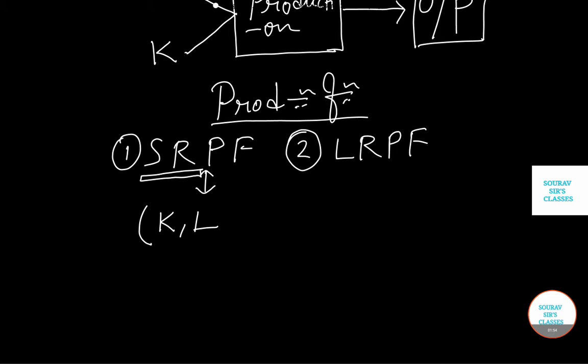Why? Because as it is a short span of time it is quite costly to change all the factor inputs. So here some factors will be fixed and some factors will be variable. In this case we can assume that K is fixed at K bar.